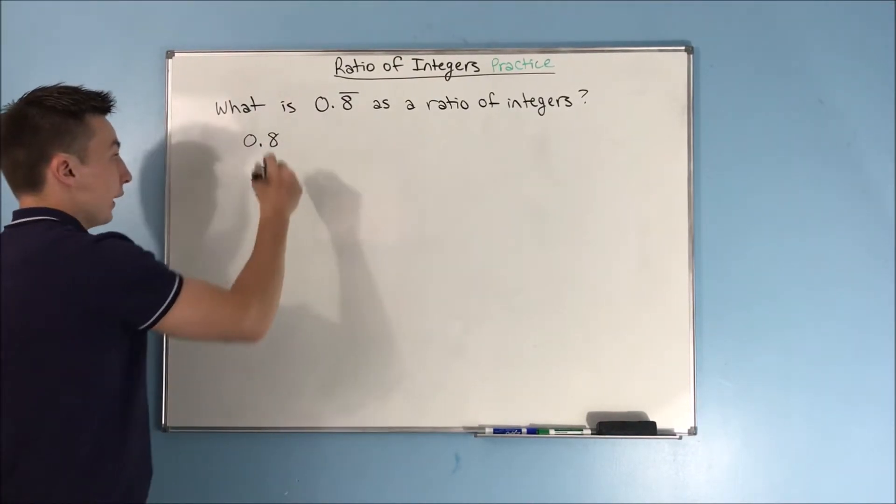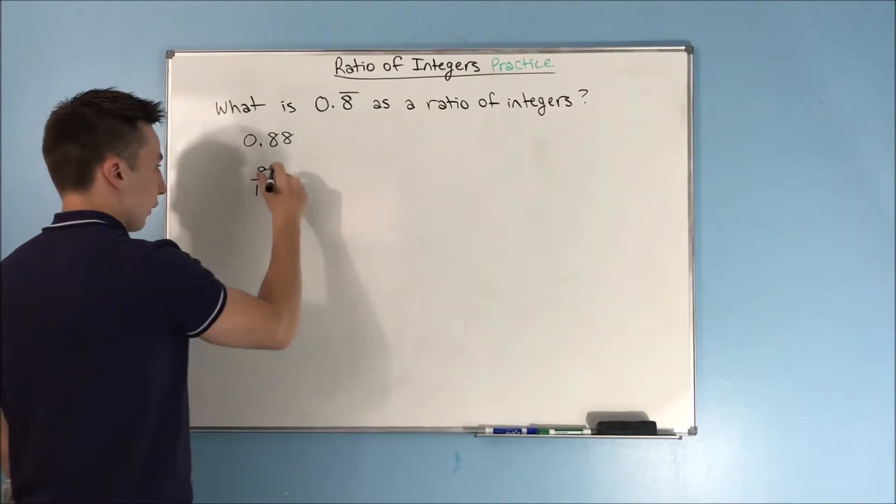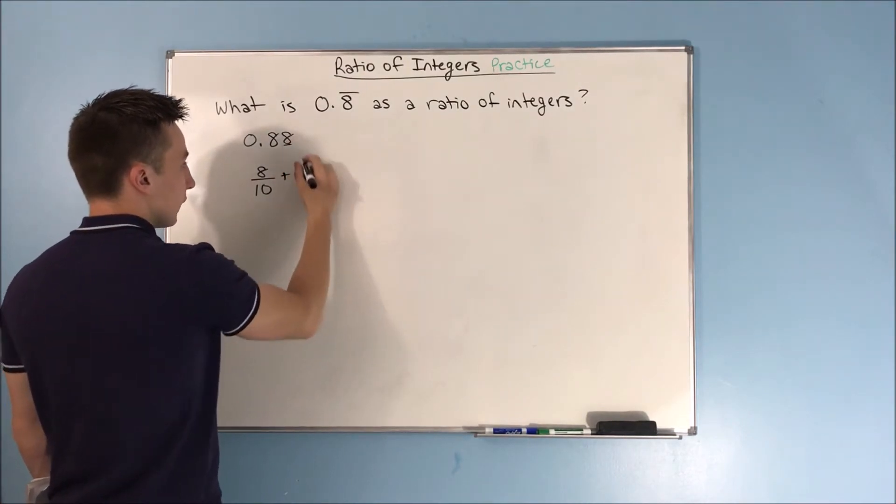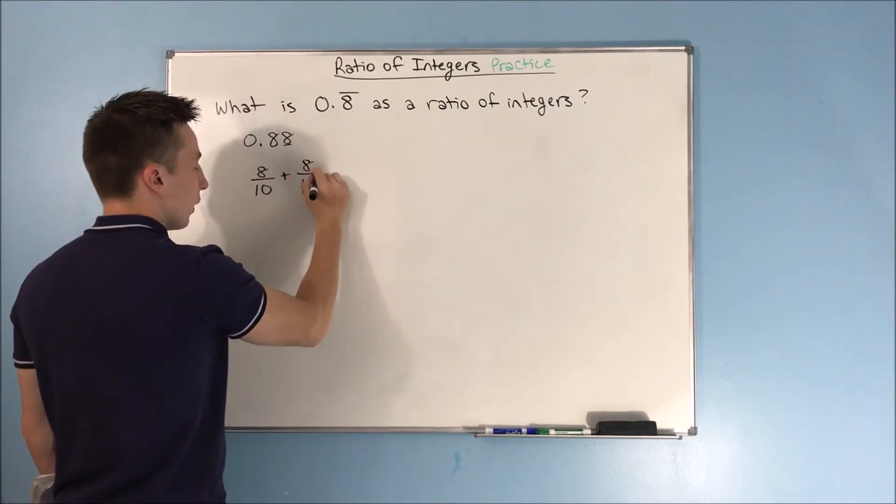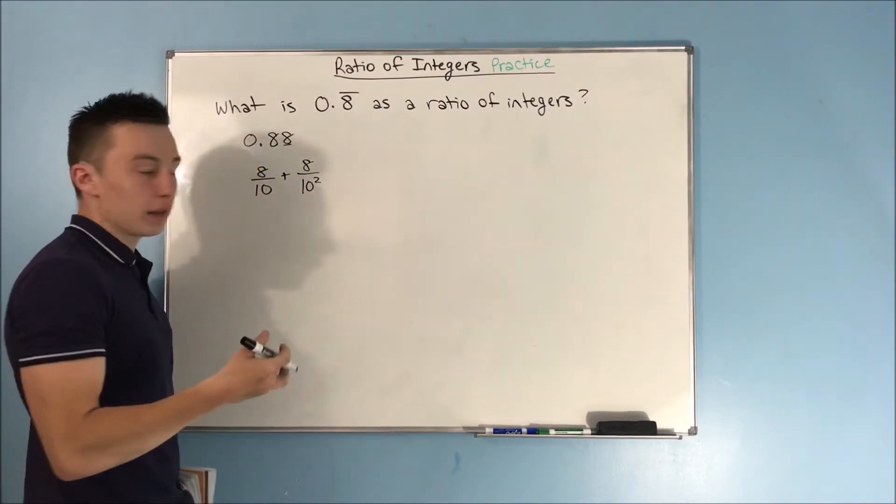Let's add another 8. Well, now we're adding another term to this. This 8 right here, that's 8 over 10 squared. Right, it's 0.08.